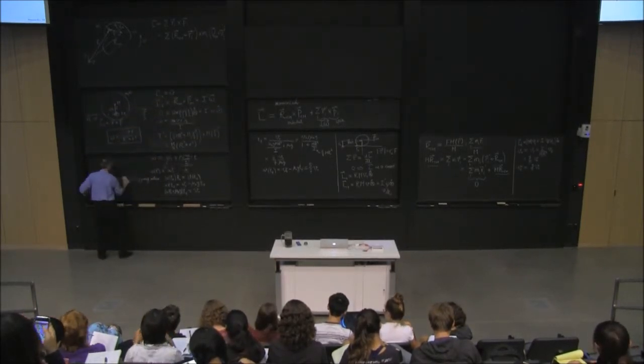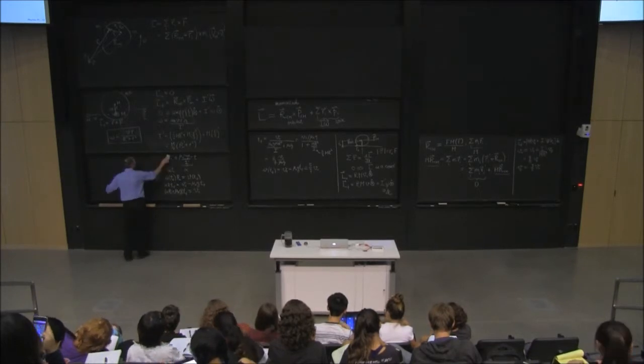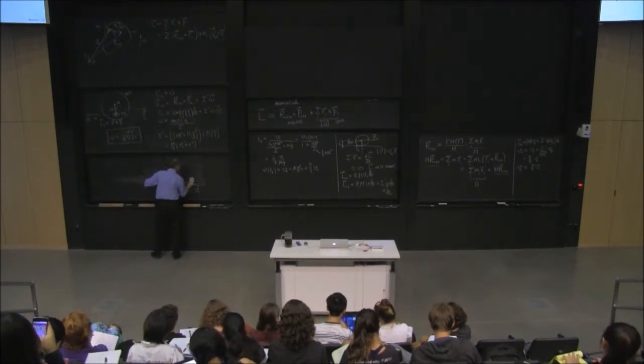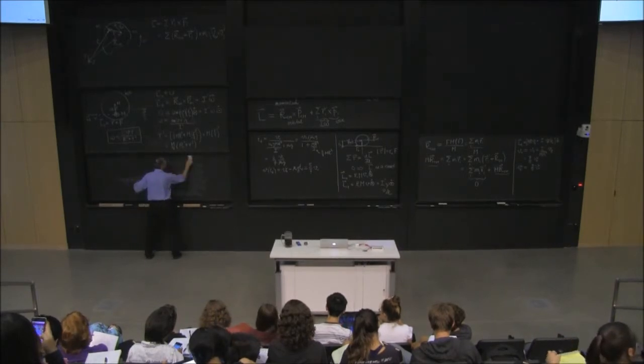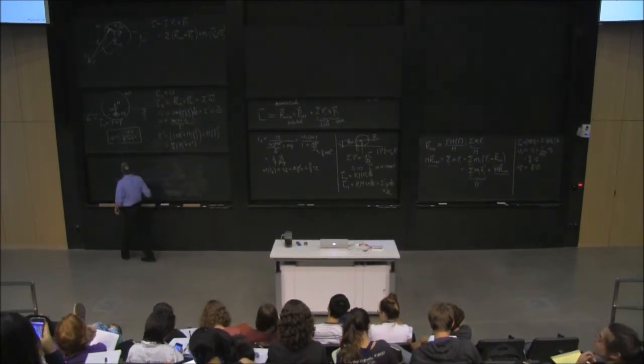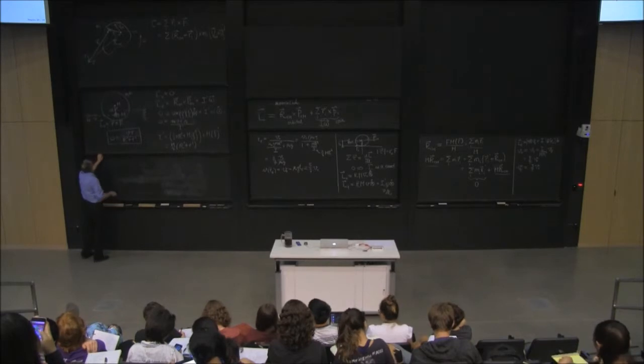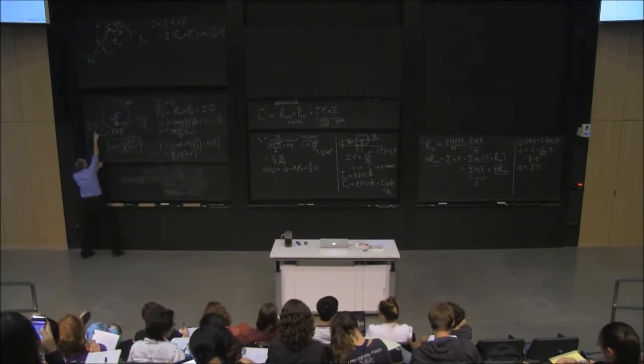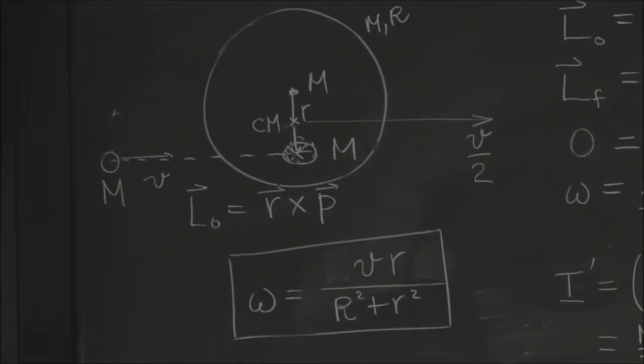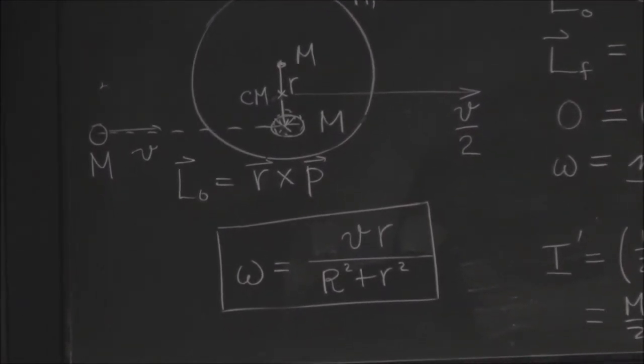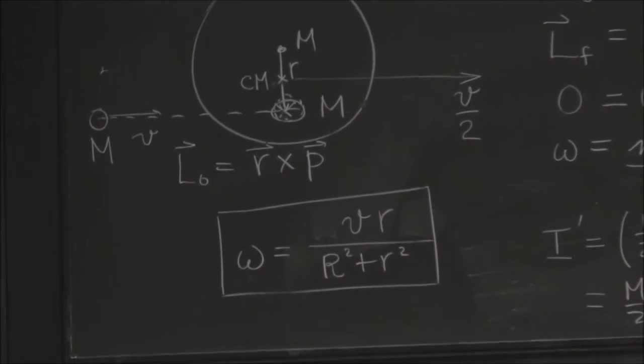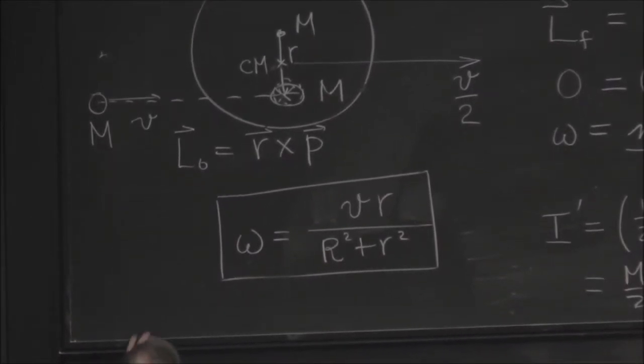So does it have any angular momentum initially then? Yes. Yeah, it does, because it's coming in. The line of action of momentum passes where? Just below by about r over 2, right? So what's the vector direction for the angular momentum initially?